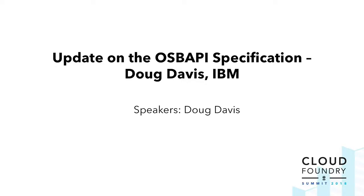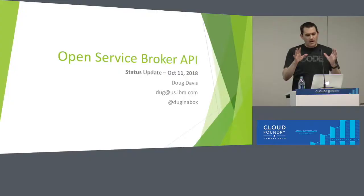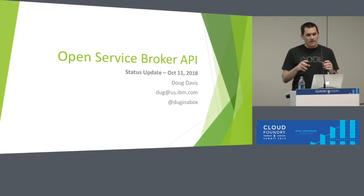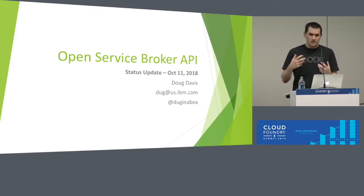Welcome, everybody. My name is Doug Davis, I work at IBM. I'm going to talk about the Open Service Broker API, but I'm not going to talk about the actual API itself, because I'm assuming you guys probably already know that. This talk is more about what we're doing in the working group itself in terms of changes to the spec.